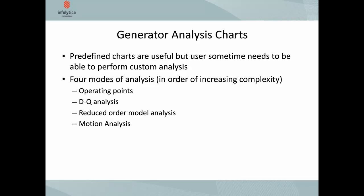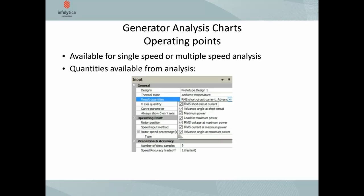The first type of analysis is the operating points analysis — the simplest analysis. It's basically a way of getting certain quantities such as short circuit current and maximum power. This can be done at a single speed, or you can also get charts of each quantity and see how they vary as a function of speed, making it a very useful tool for a given generator.